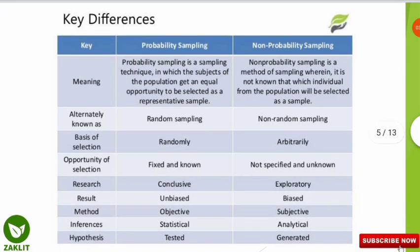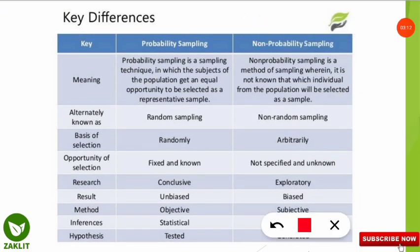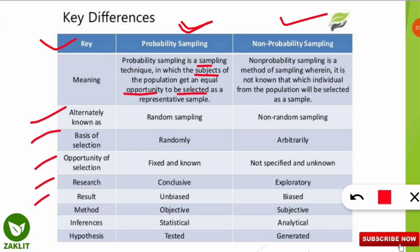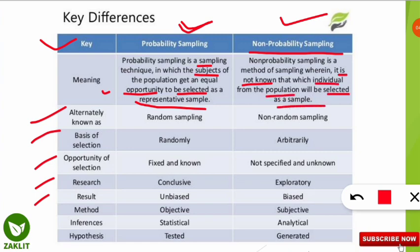Let's go through the key differences between probability sampling and non-probability sampling. Probability sampling is a technique in which subjects of the population get an equal opportunity to be selected. Non-probability sampling means it is not known which individual from the population will be selected as a sample. Probability sampling is also known as random sampling; non-probability sampling is known as non-random sampling.